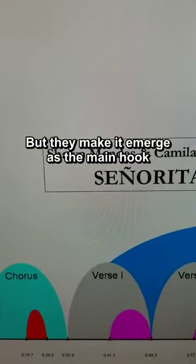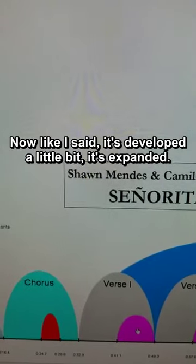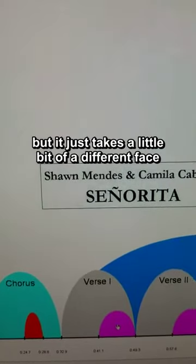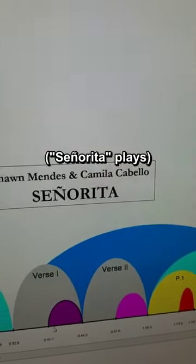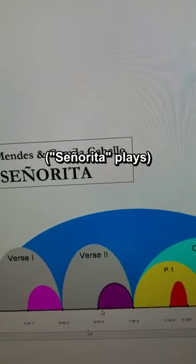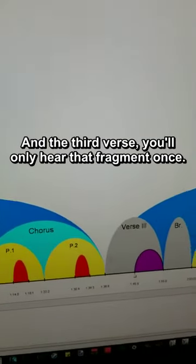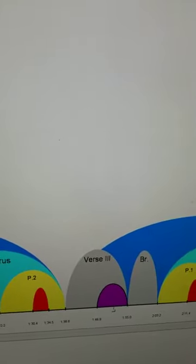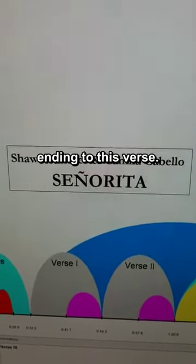But they make it emerge as the main hook by planting it in the verses. Now like I said, it's developed a little bit — expanded, so each of these fragments gets more space. So it doesn't function as fragmentation anymore, but it takes a slightly different shape even though it's the same melodic fragment. And again in the first and second verse you hear it multiple times, but in the third verse you only hear that fragment once, and Camila has her own sort of cadential ending to the verse.